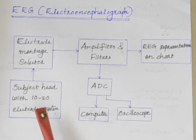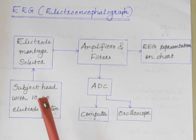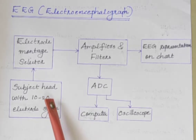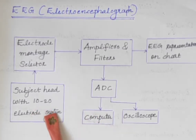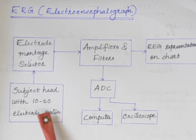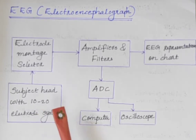EEG electrodes are smaller than ECG electrodes. EEG electrodes are arranged on the scalp according to a standard known as the 10-20 system. The numbers 10 and 20 refer to the fact that the distance between adjacent electrodes are either 10% or 20% of the total front-back or right-left distance of the skull.